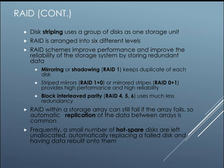RAID uses striping — treating a group of disks as a single storage unit — and there are six levels of RAID that improve storage performance and reliability by storing redundant data. The simplest form is mirroring (RAID 1), which keeps a duplicate of each disk. Striped mirrors or mirrored stripes provide high performance and high reliability. There is also block interleaved parity, which uses much less redundancy. RAID within a storage array can still fail if the array as a whole fails, so automatic replication of data between multiple arrays is common, though it can be expensive. Hot spare disks left unallocated can automatically replace a failed disk and have data rebuilt onto them.